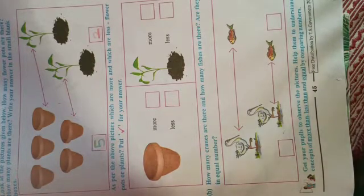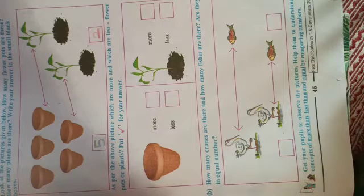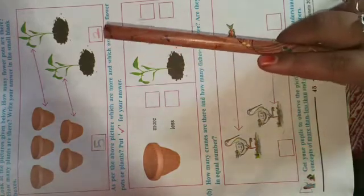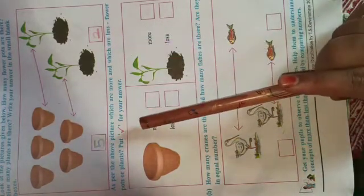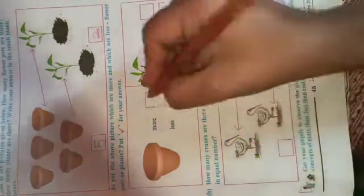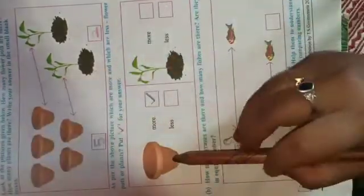How many flower pots we have and how many plants we have? The flower pots, we have five. And plants we have two. So which are more? See, count one, two, three, four, five. Okay, five. And here plants, only two. Means pots are high in number.